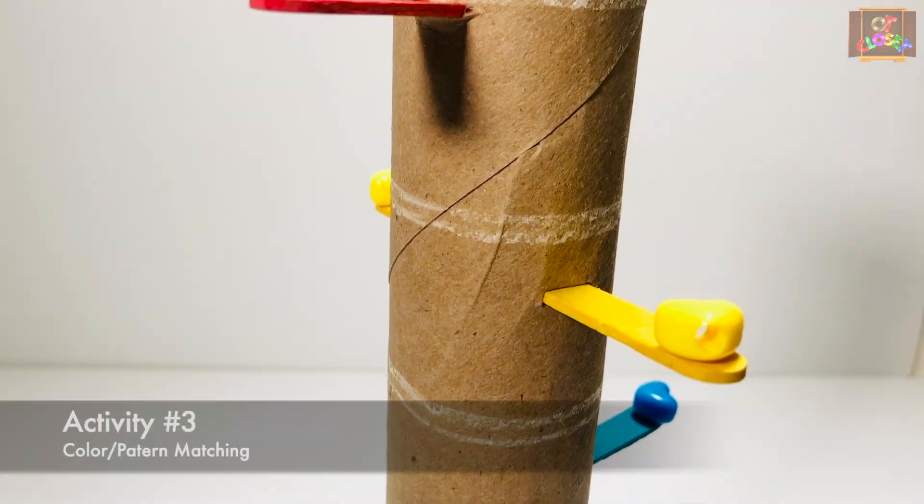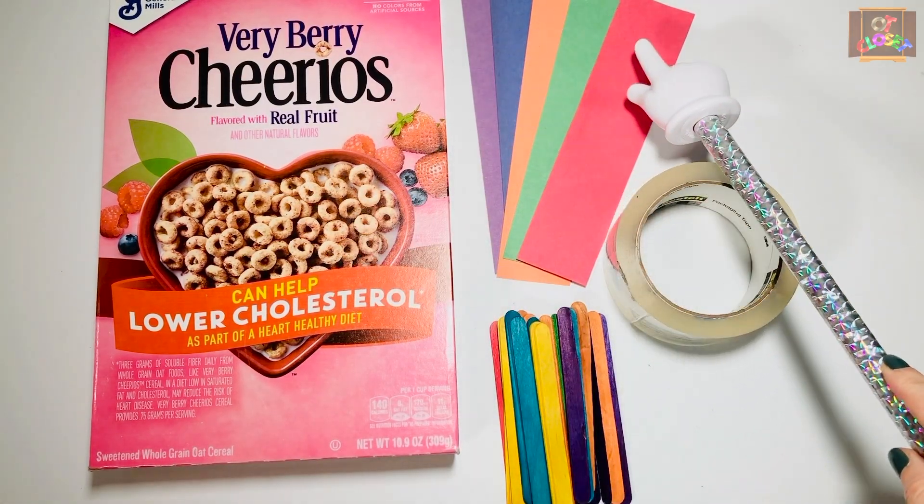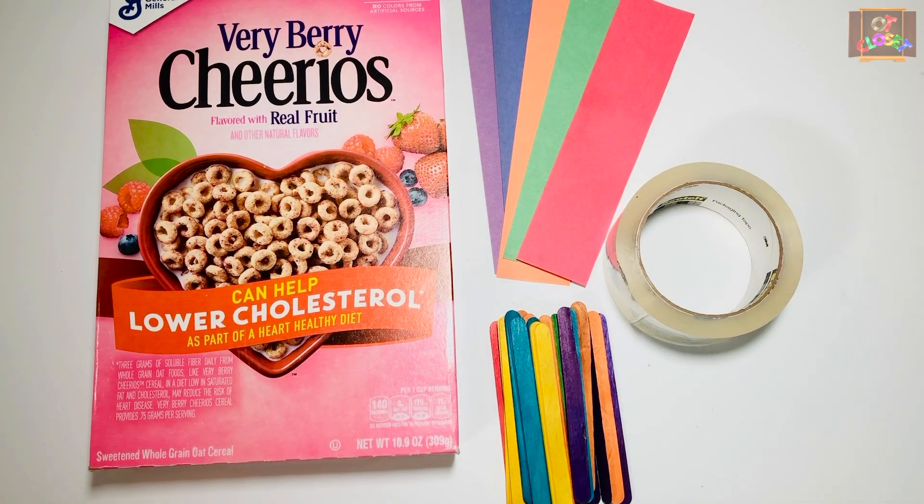For activity number three, you need an empty cereal box, strips of construction paper, popsicle sticks to match the colors of the paper, and wide scotch tape.